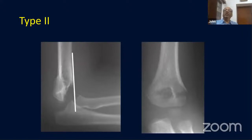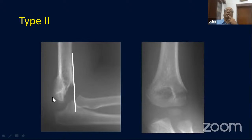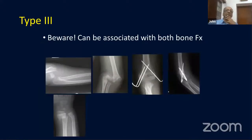For Type 2 fractures, the anterior humeral line will tell you that the capitellum is way behind it — indicating posterior displacement. This can be a minimally displaced fracture or show more displacement and angulation. You will generally not miss this on X-ray, but you have to decide how to treat it.